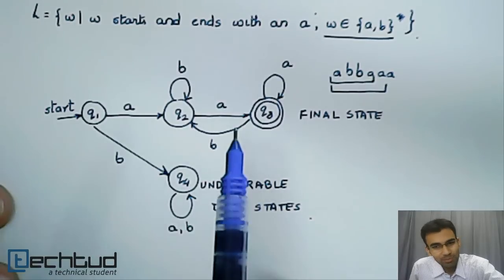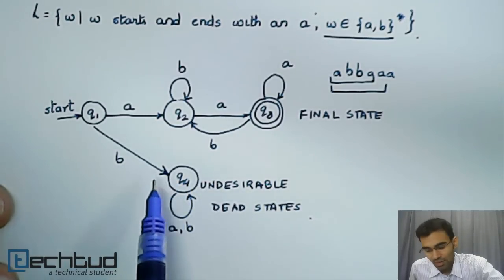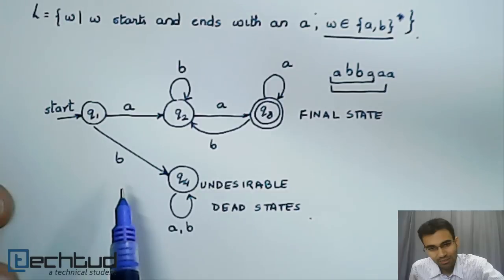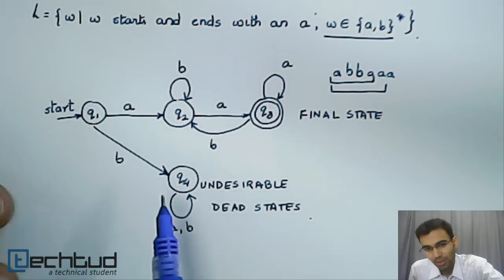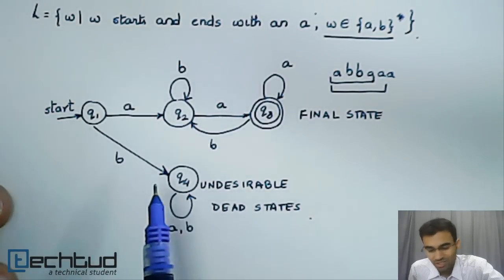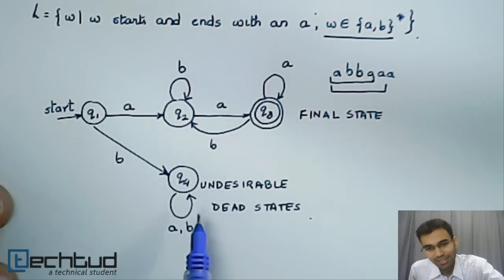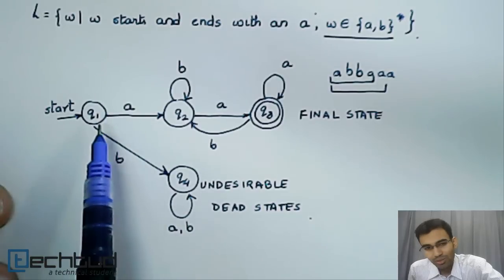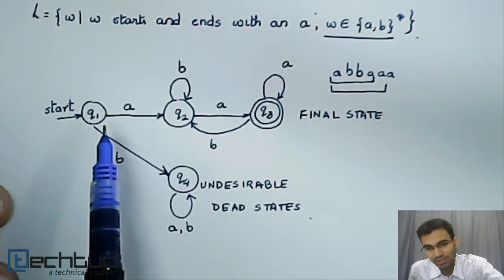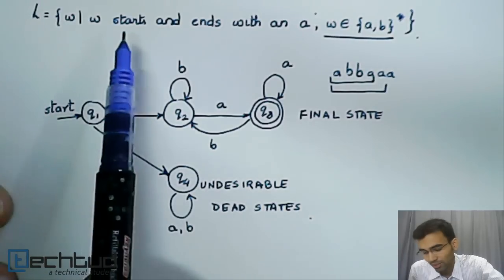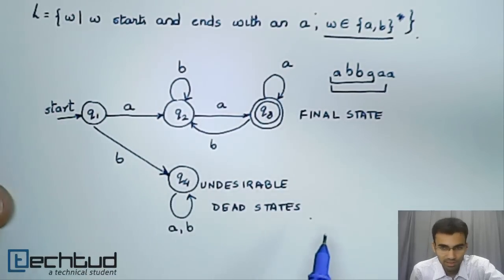So there are three types of states: states that are dead, which are undesirable. That is, we know at a finite point in time after reading a part of the string that this string will definitely not be part of the language. We go to an undesirable dead state. However, if we are still unsure of whether the string will be accepted and is part of the language, we stay in a path that could possibly lead you to a final state.